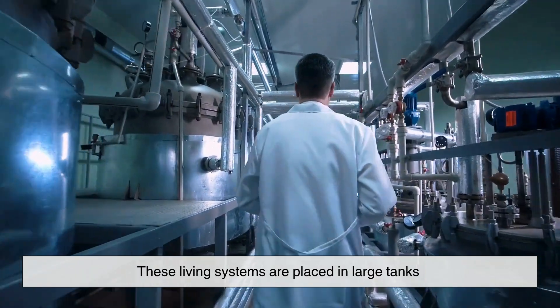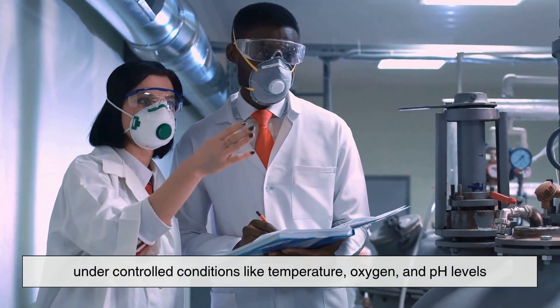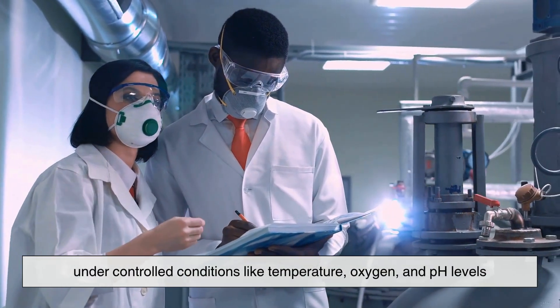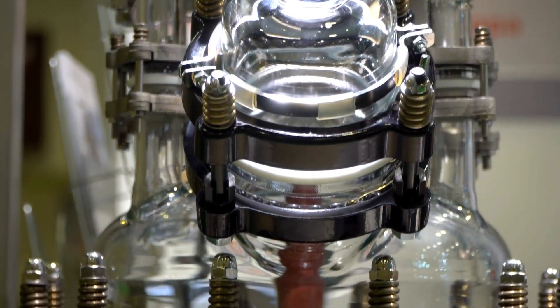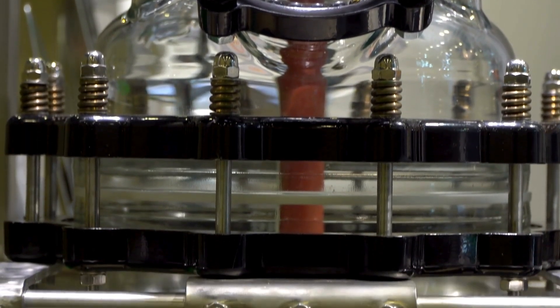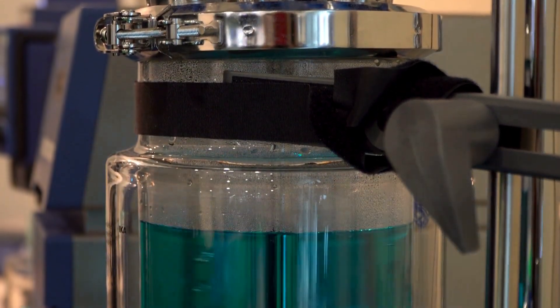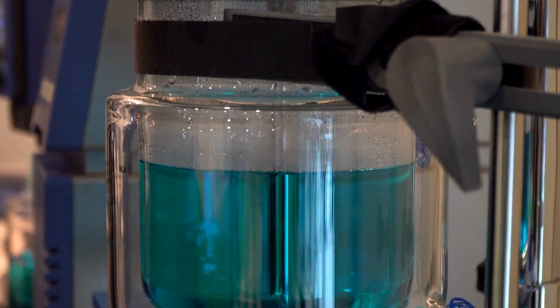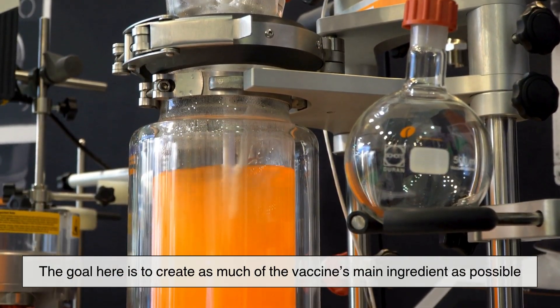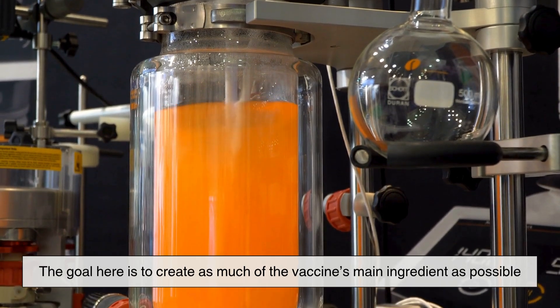These living systems are placed in large tanks under controlled conditions like temperature, oxygen, and pH levels. These tanks are called bioreactors. This step takes time because the cells need to multiply and produce enough material. The goal here is to create as much of the vaccine's main ingredient as possible.